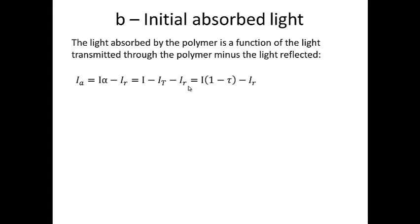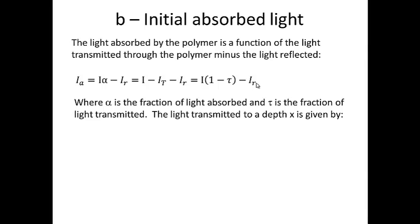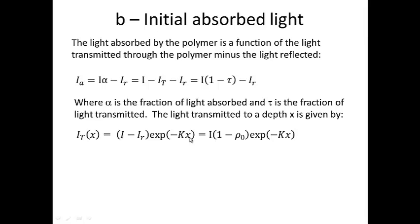Next we have the initial absorbed light. The absorbed light is equal to the intensity of the initial light times the absorption coefficient minus I sub r, the reflected light. This is also equal to the initial intensity of light minus the transmitted light minus the reflected light, because the transmitted light, reflected light, and absorbed light have to add up to the initial intensity. This is equal to I times 1 minus tau, the transmitted light coefficient, minus I r, the reflected light. The light transmitted to a depth x is then given by I t of x equals the initial intensity minus the reflected light, times the exponent of negative kx, which we can rewrite as I times 1 minus rho naught times the exponent of negative kx.